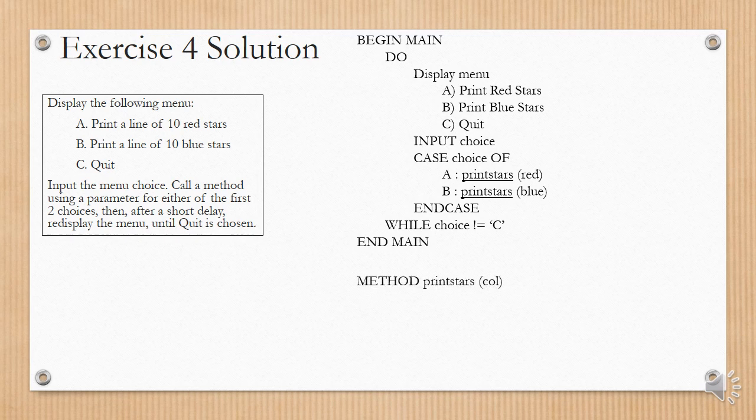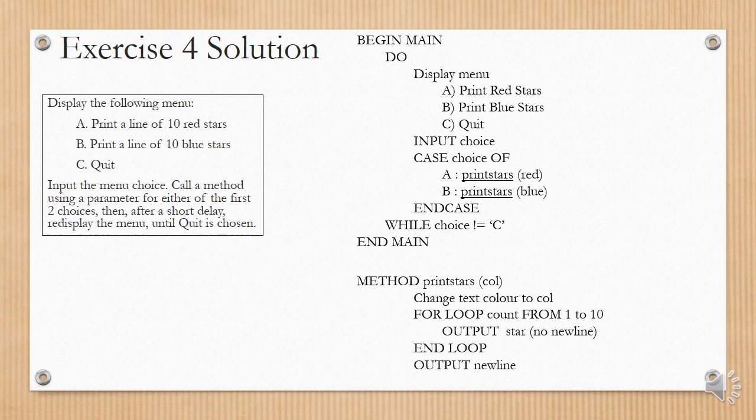In the method, we've got method print stars and in brackets col, which will be the parameter. Change text color to col. Then we have a for loop with a counter going from 1 to 10, and we output the star. Without a new line at the end of the line, that is similar to the system.out.print in Java. And then we end the loop. We output a new line. When we get to the end of the 10 stars, we need to go enter. And that's the end of the method.